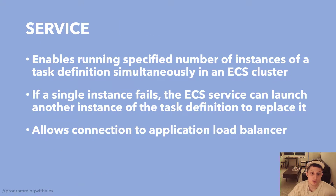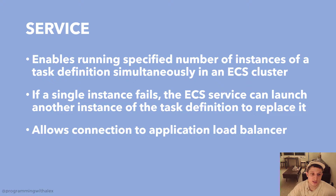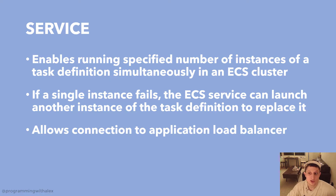Moving on, we have the service. As shown in the diagram, the service contains multiple EC2 instances, and each EC2 instance contains the task. The service enables running a specified number of instances of a task definition simultaneously — like we saw in the middle diagram running the old task and new task at the same time inside an ECS cluster. Also, if a single instance fails, the ECS service can automatically launch another instance to replace it. The service also allows connection to the application load balancer, which we'll cover in more detail in the next video.